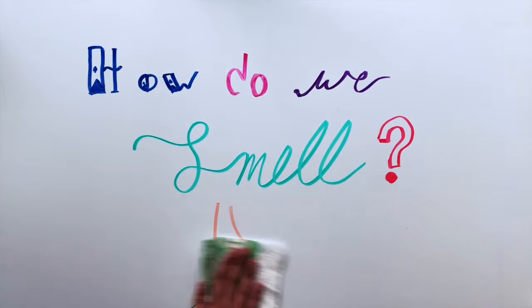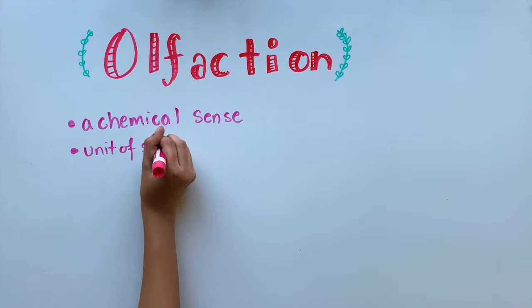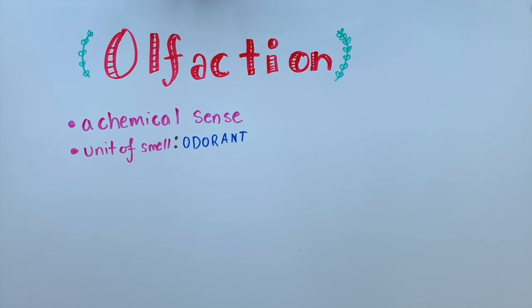So, how do we smell? Olfaction is one of the chemical senses, the other being taste. The physical unit of smell is called an odorant, which are chemicals that we can smell.